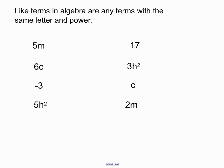We've got 8 terms here all together. Now we're looking for pairs of terms here that have the same letter and power. So we have a look at it and we see that we have 5m and 2m. They have the same letter and power. So we would say that 5m and 2m are like terms.